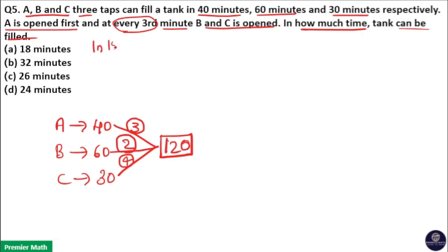That is in the first minute A is opened, that means three liters is filled. And in the second minute A is already opened, so three liters again filled. And at every third minute, that is in the third minute, A is already open but at every third minute B and C opened.